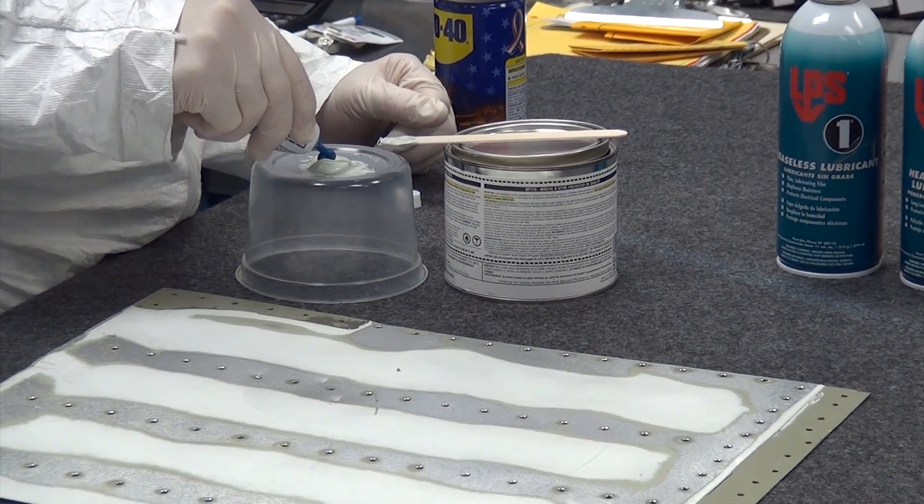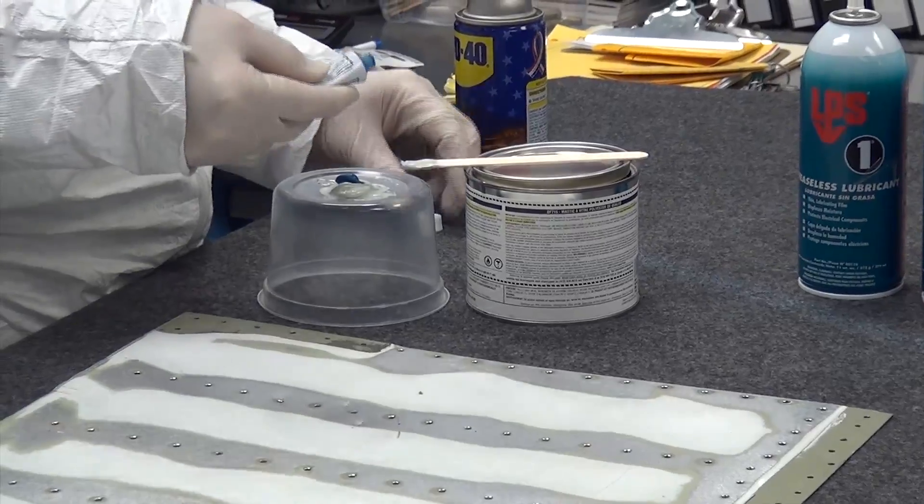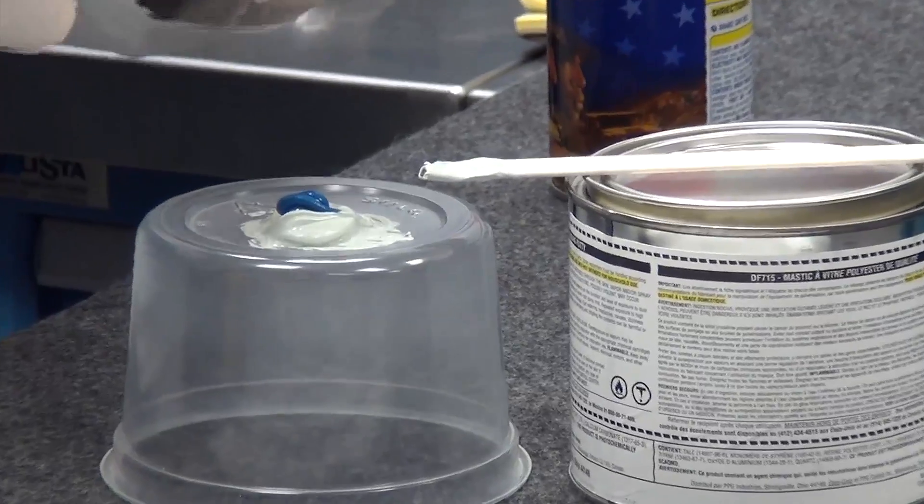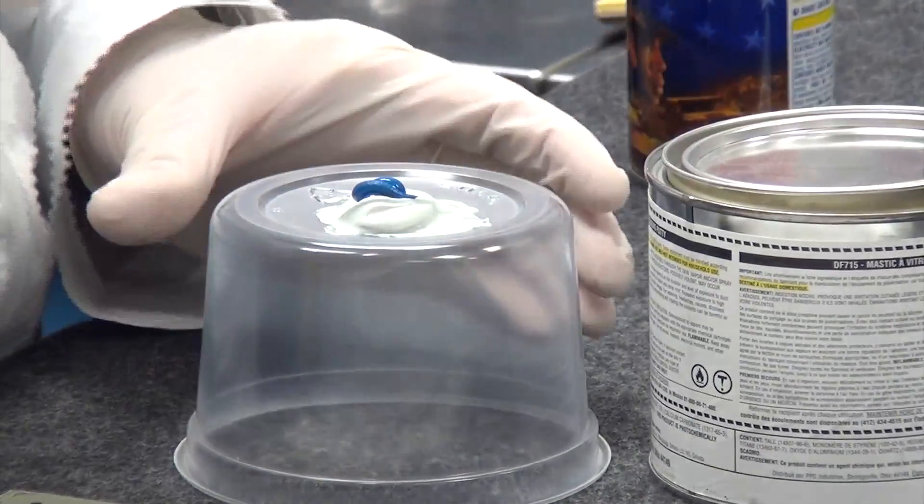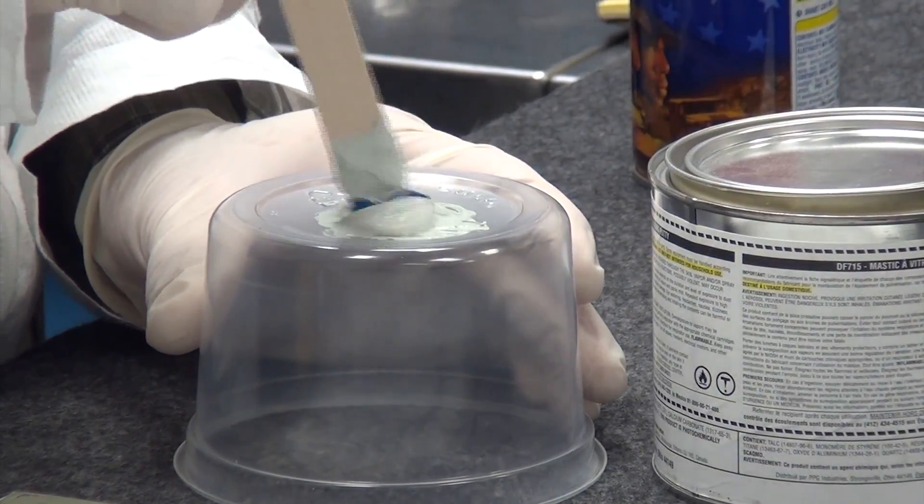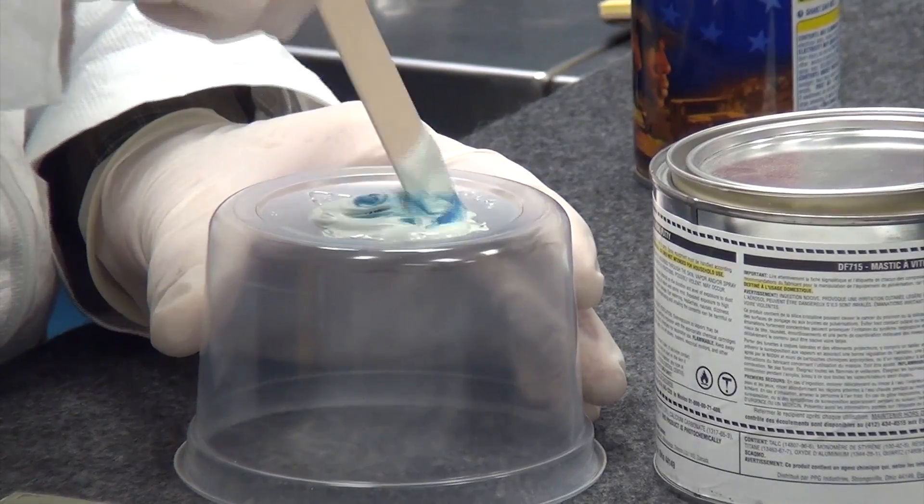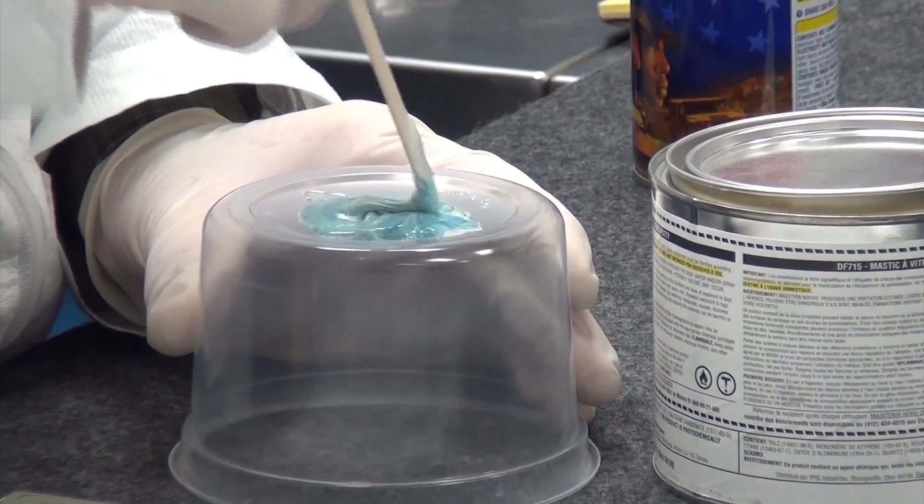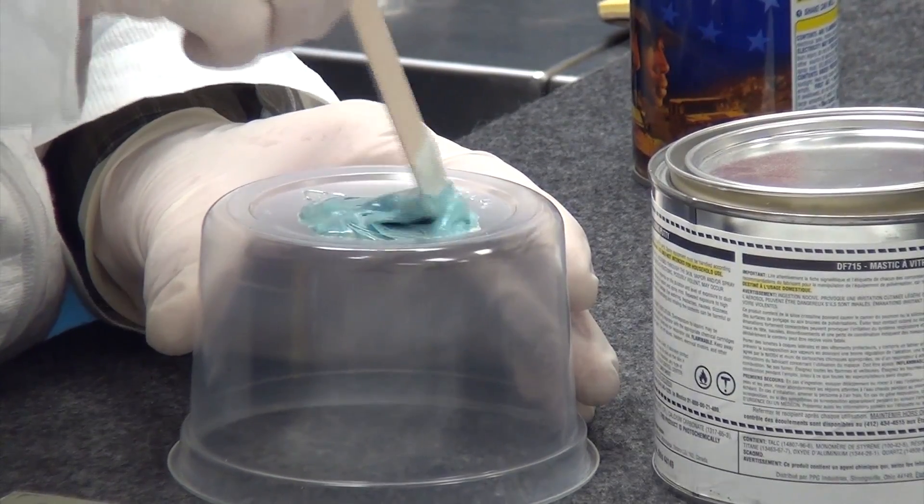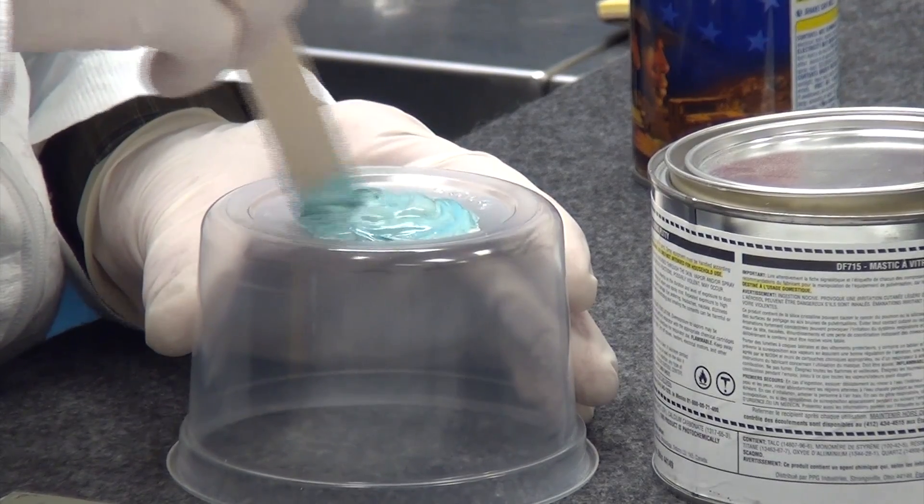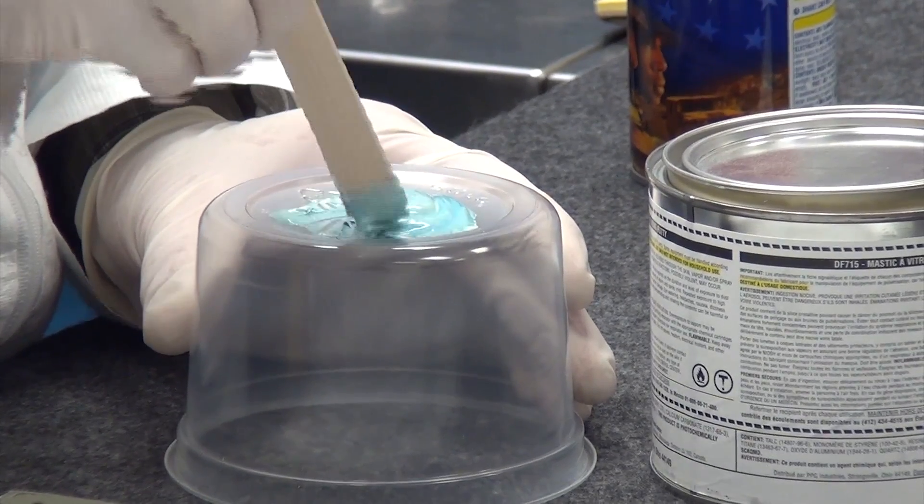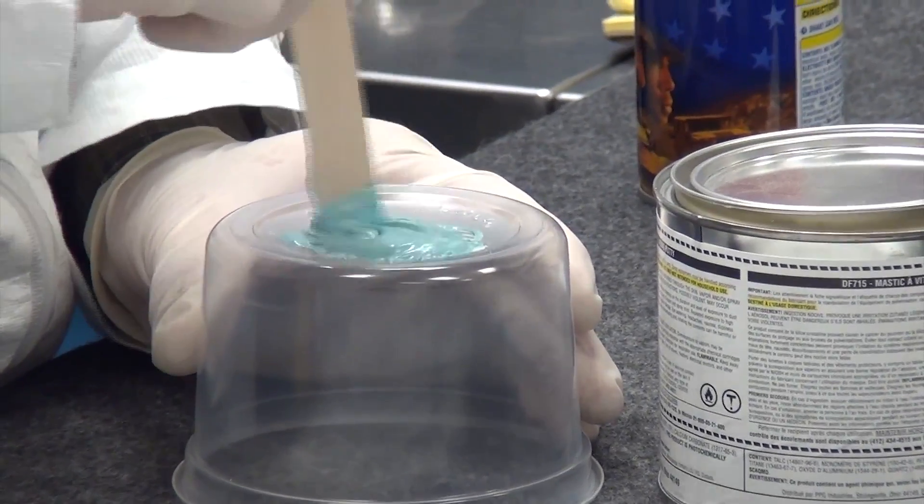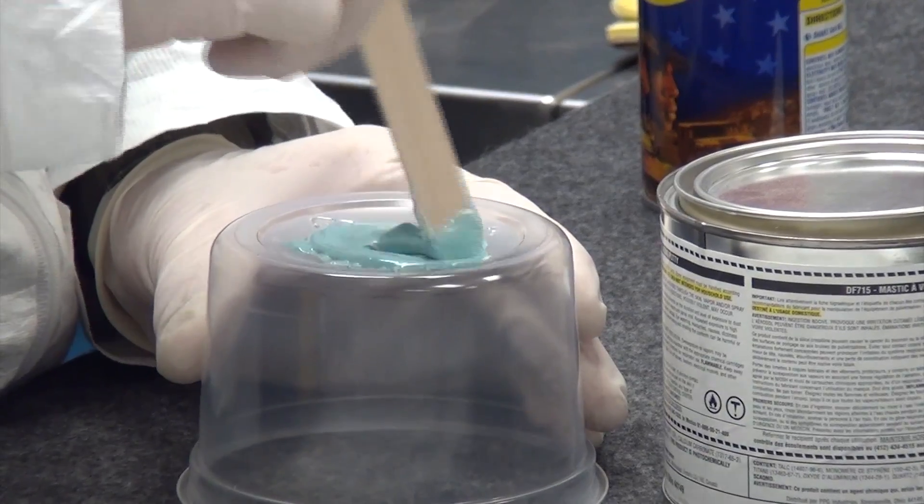I'll tell you what, you're better off having too much hardener than not enough, especially if it's on a door frame. I like to mix stuff on top of an inverted bowl like this. It gives you a good surface. The mixing instructions say that you don't want any streaking. You don't want to be seeing that real light color of the resin or the real dark color of the hardener.